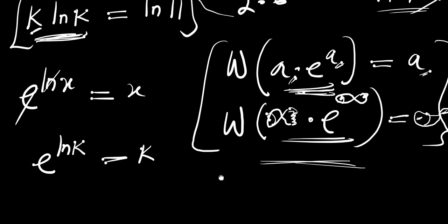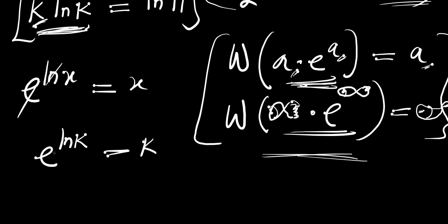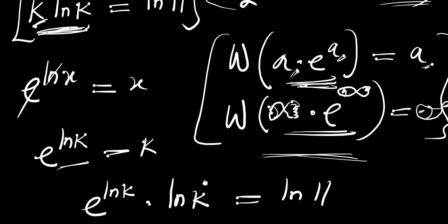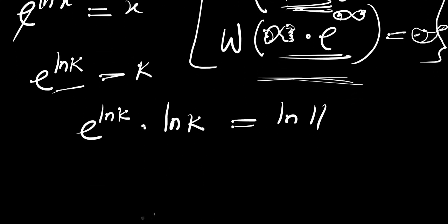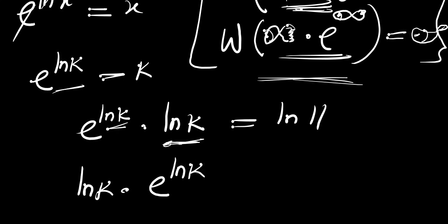We are going to replace k with e raised to the power of ln of k — which is the same thing as k — and we have times ln of k, and this equals ln of 11. Now we rearrange: write ln of k times e raised to the power of ln of k equals ln of 11. We have rearranged the function to be exactly in the required form.